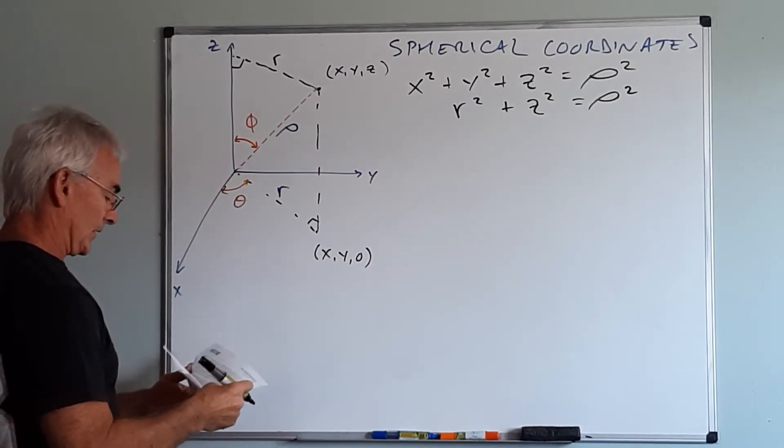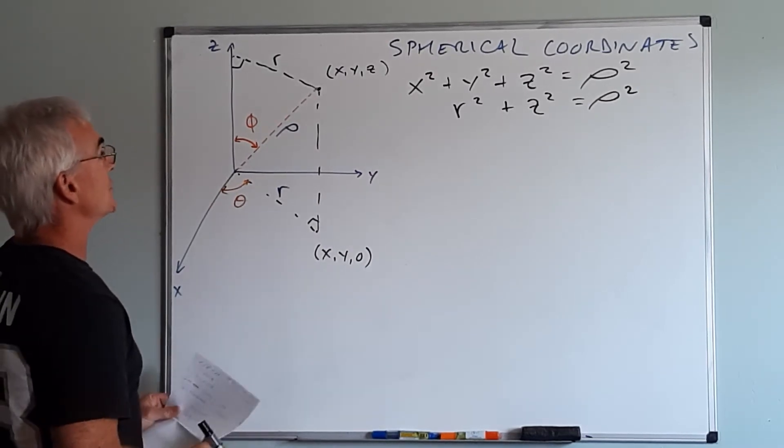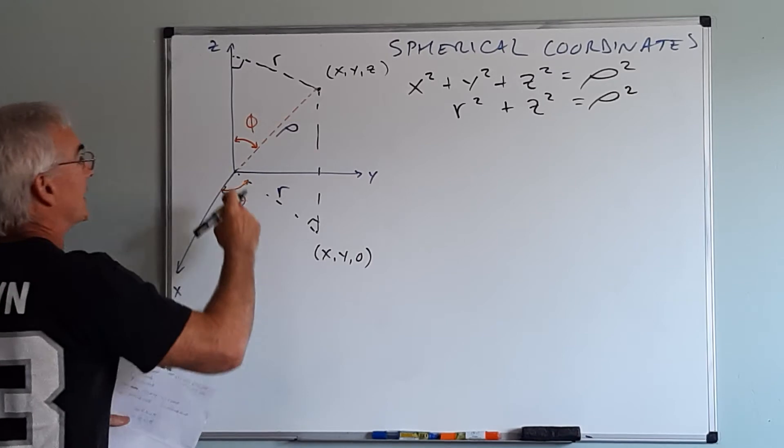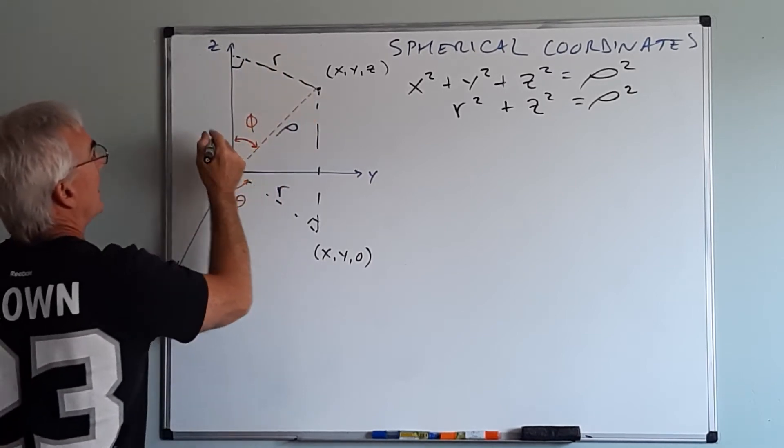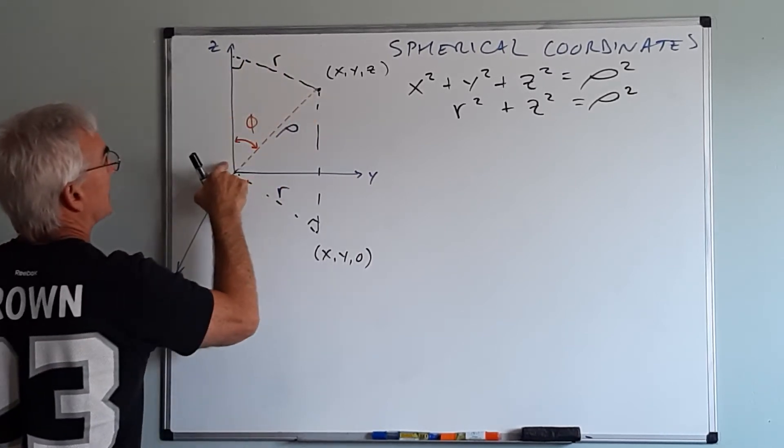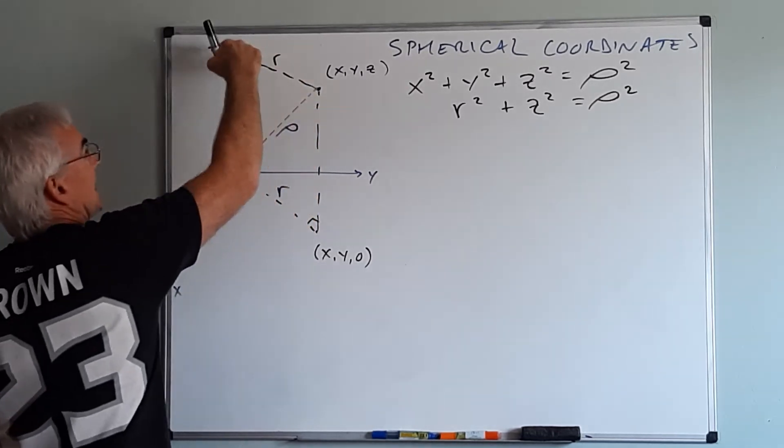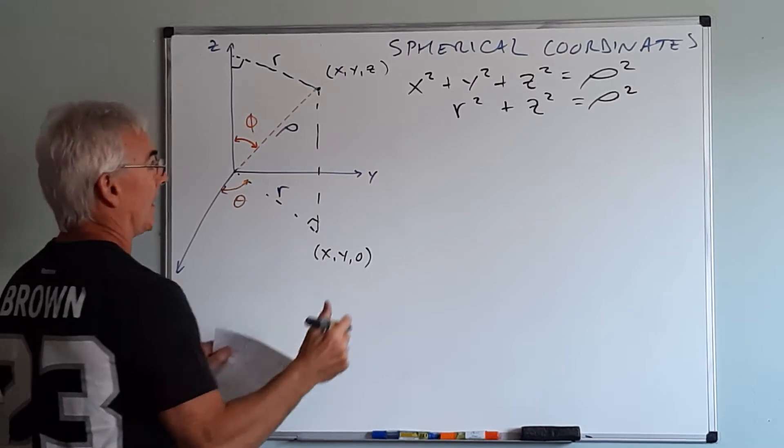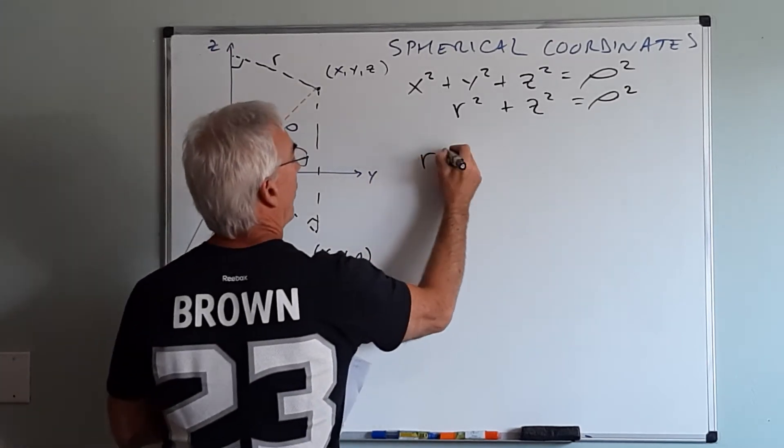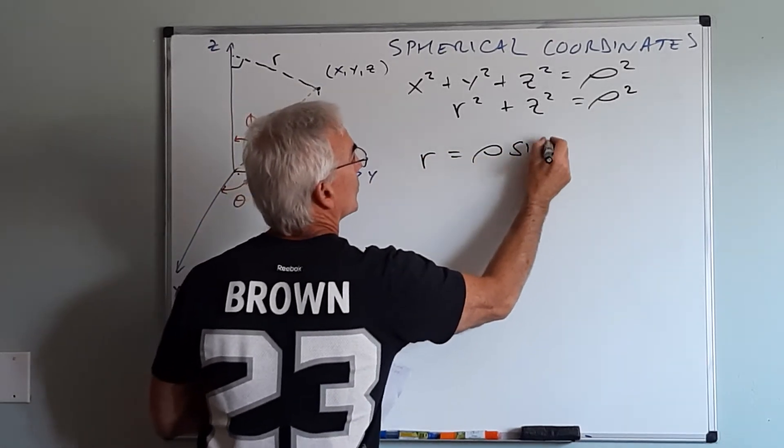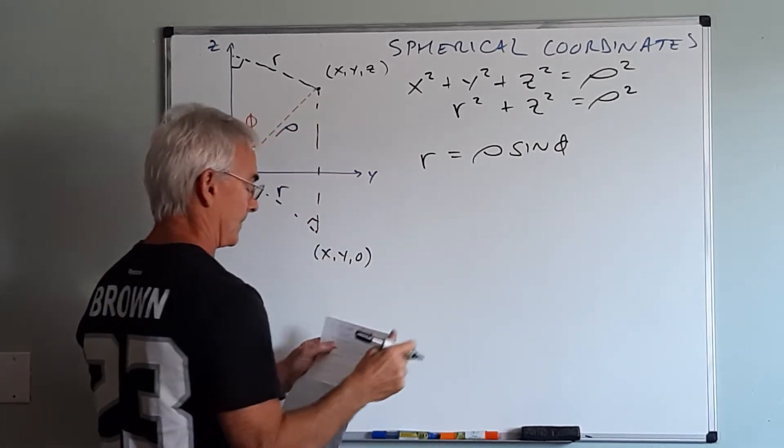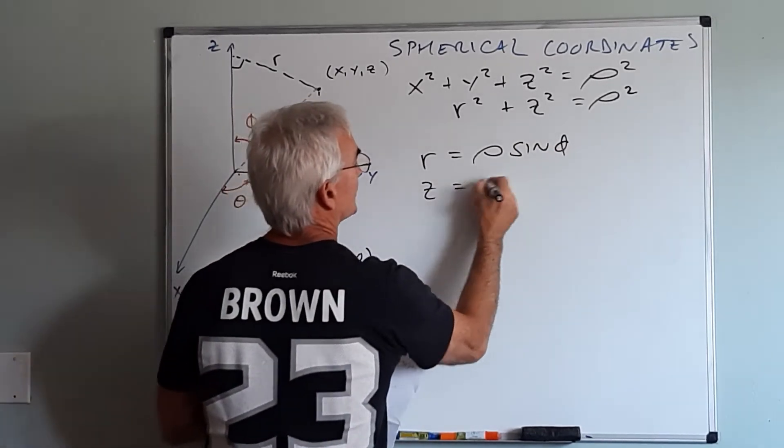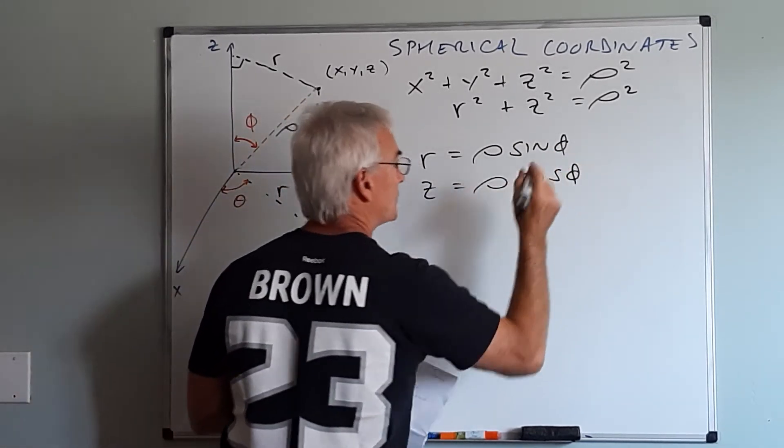Now we have a really nice SOHCAHTOA relationship here. So now if I look at this portion right here I know that this length is z, this length is rho, this length is R, that angle phi. So if I look at this I can see then that R equals rho sine phi and z equals rho cos phi.